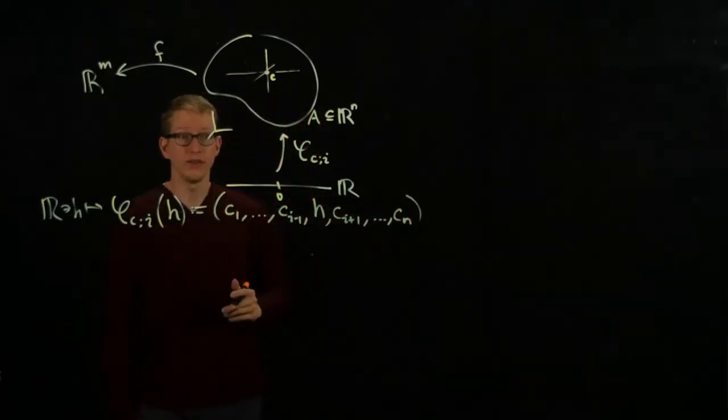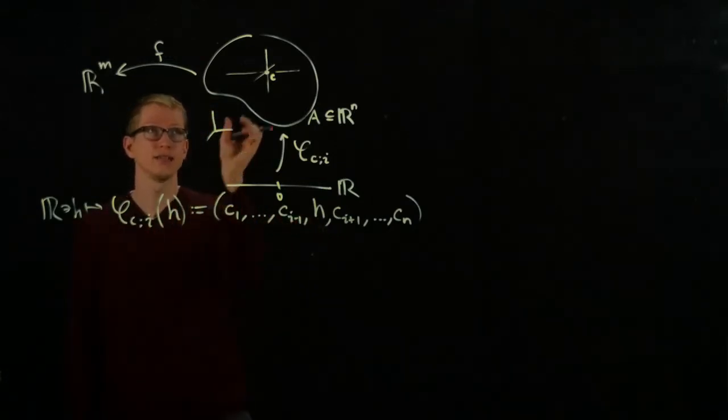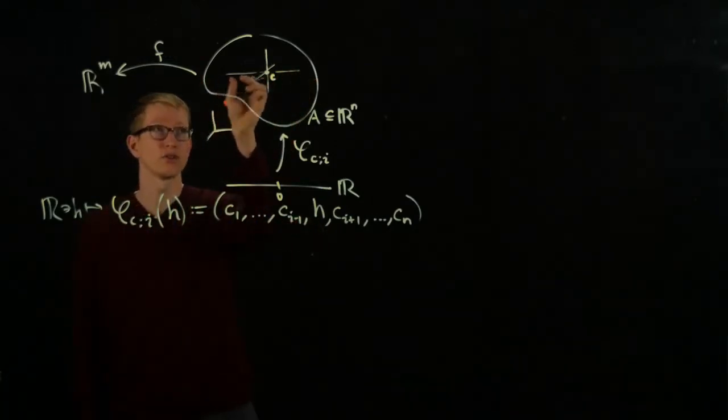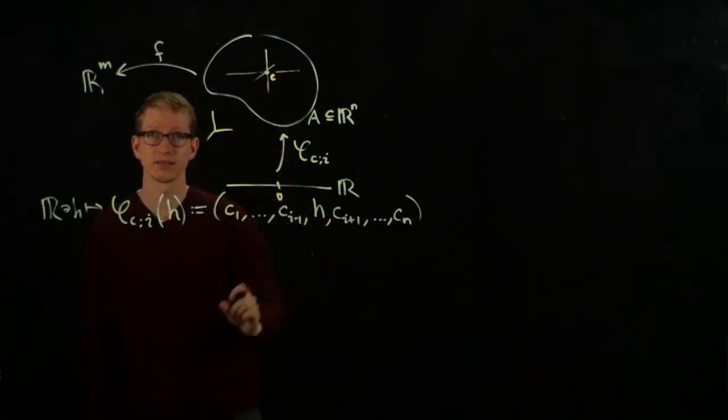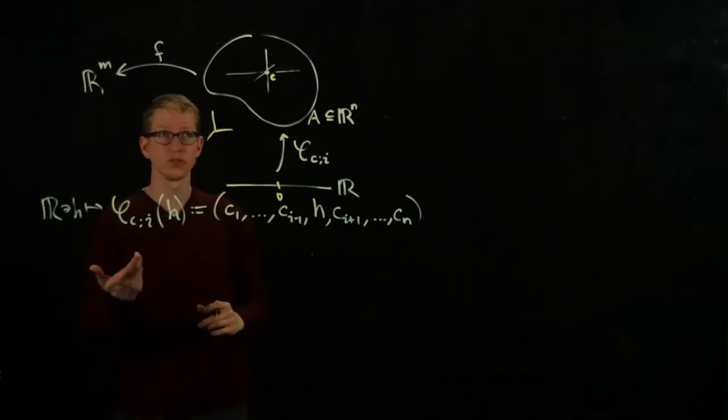Now, as H varies, this is exactly giving us the line through C along the i-th axis. That's what this function is doing.